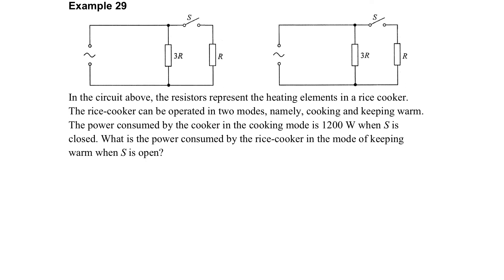Let's take a look at the following example. You can see the two circuits are the same. It is the heating element of a rice cooker, which has two modes: the cooking mode and the keeping warm mode. For the cooking mode, it has higher power. So when the switch is closed, you can see that they are connected in parallel.